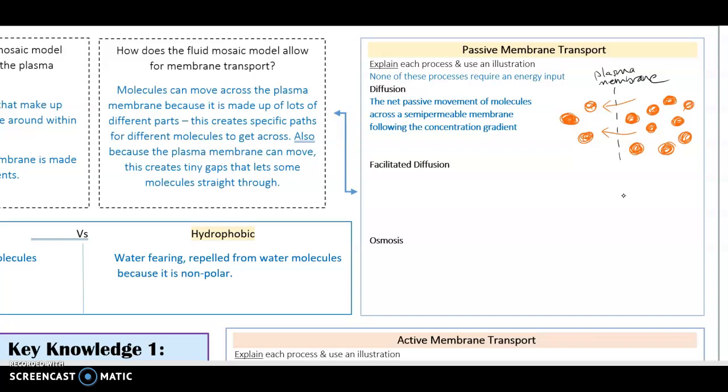Facilitated diffusion. Now, this is essentially the same as diffusion, but the problem is these molecules are often too big a charge or too big in size to get straight across a plasma membrane. So instead, they rely upon a protein to help them across. So here you can see I've typed up exactly the same definition, but with one extra detail, we've got the help of a transport protein. Let's draw that.